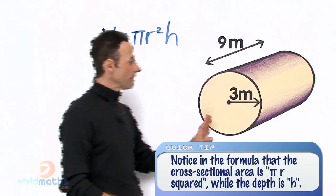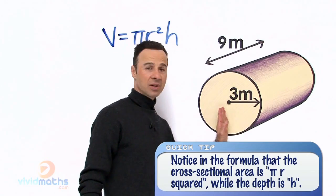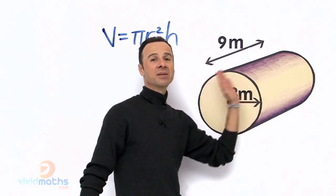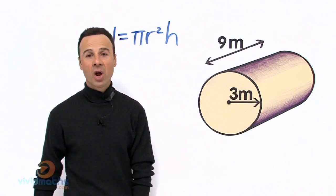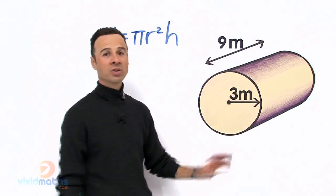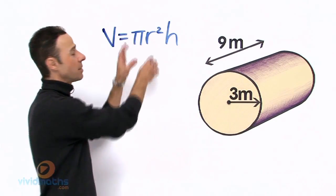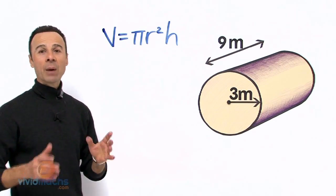Let us take a closer look at this cylinder. As I said before, the radius is three meters and the length or height is a grand total of nine meters. What we need to do is substitute those numbers into that formula.